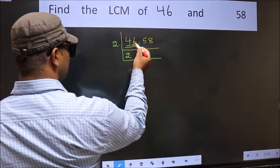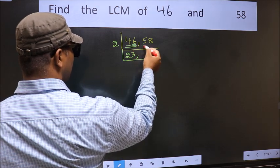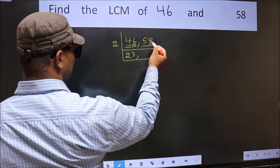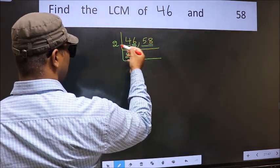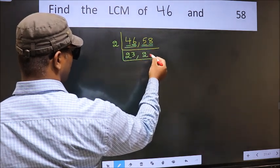The other number 6, when do we get 6 in 2 table? 2 times 3 is 6. Now the other number 58, last digit 8 is even, so this is divisible by 2. First number 5, a number close to 5 in 2 table is 2 times 2 is 4.